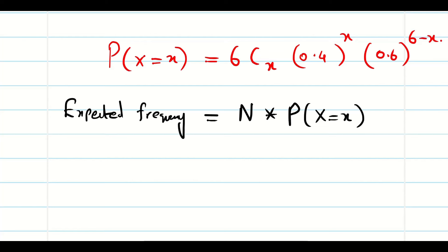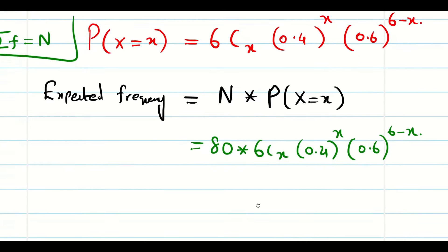So capital N is what? Just now I said my summation F is my capital N. So it is going to be 80 into 6CX 0.4 power X 0.6 power 6 minus X.